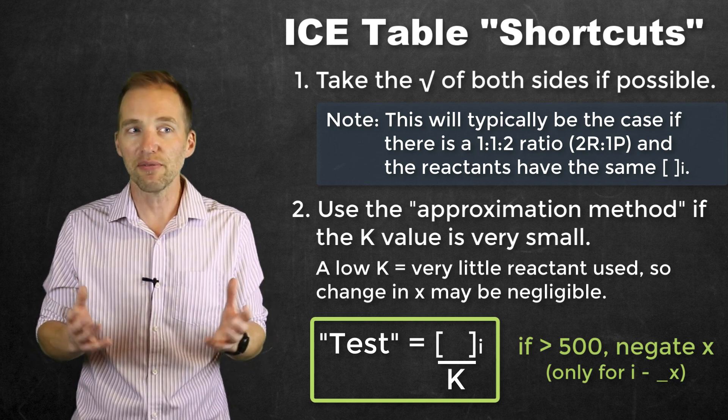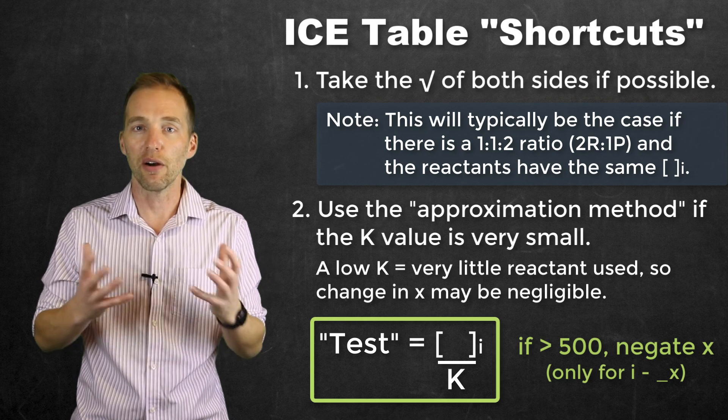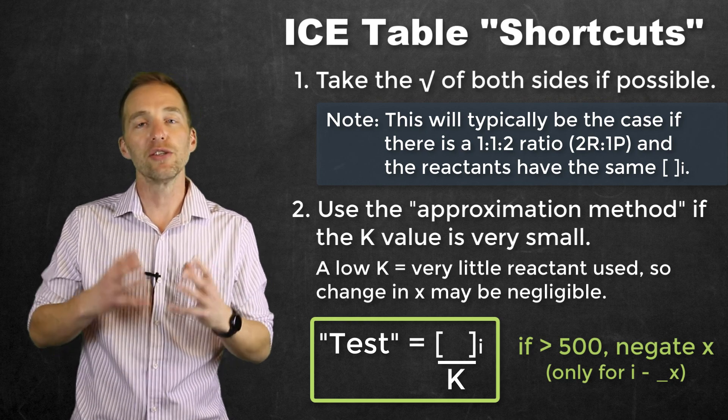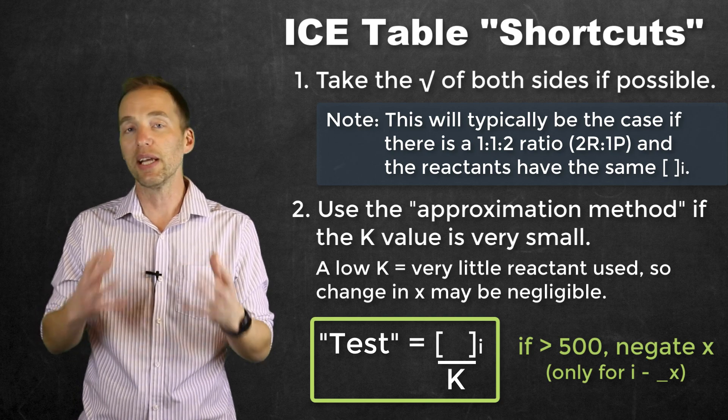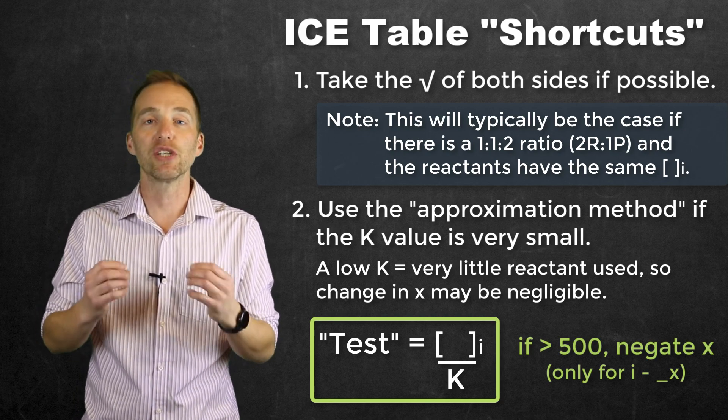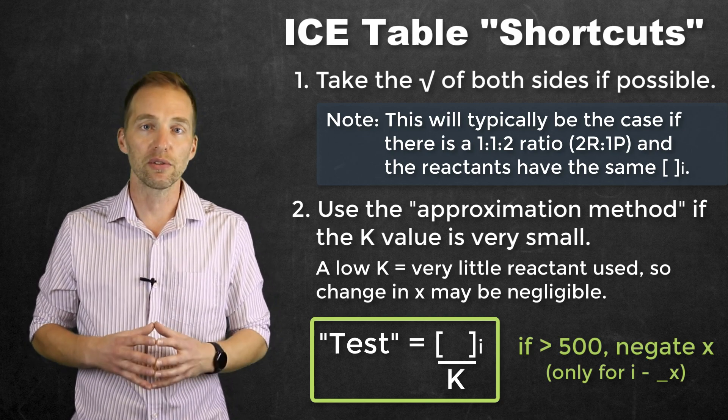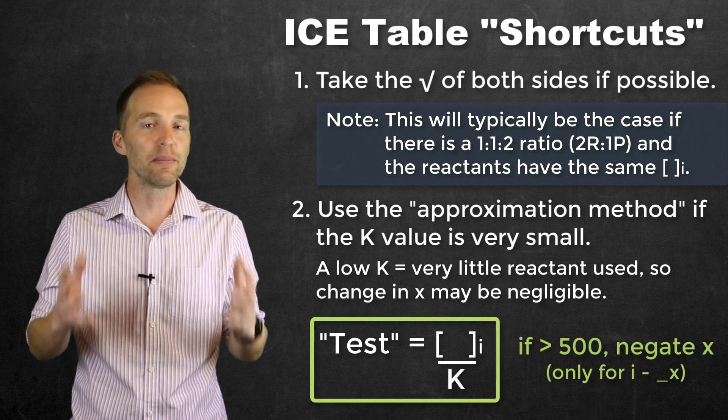the X value is so low itself, it's not actually going to change our initial concentrations all that much. And so that's why it's safe to eliminate or negate that X when we have extremely low K values. And again, it's only true for extremely low K values. For extremely large ones, you're out of luck.